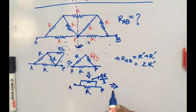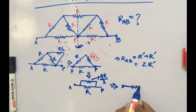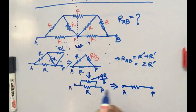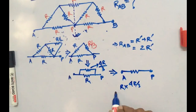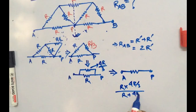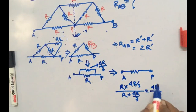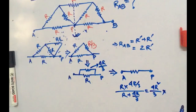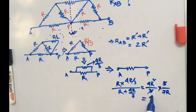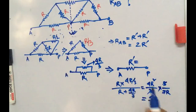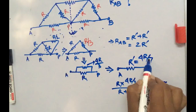Now R and 4R/3 are in parallel. The resistance across A and P is: (R × 4R/3) / (R + 4R/3) = (4R²/3) / (7R/3) = 4R/7. So r_dash is equal to 4R/7.